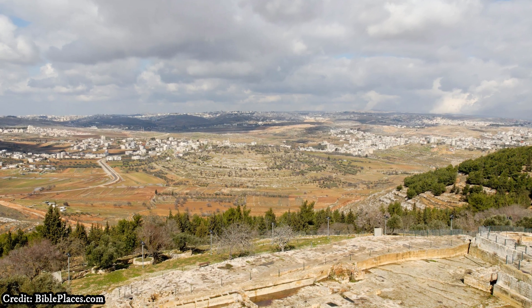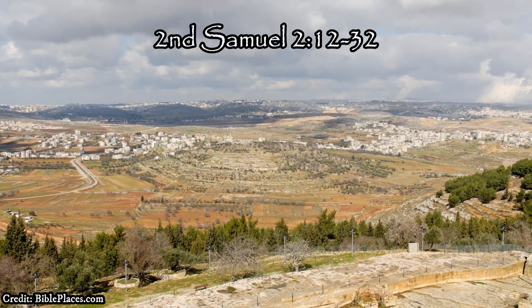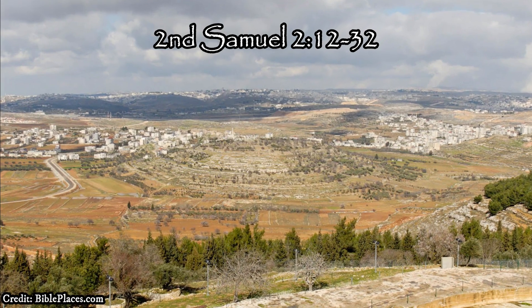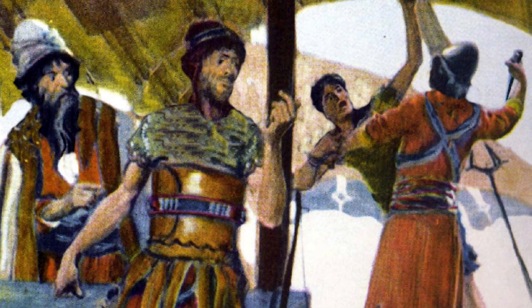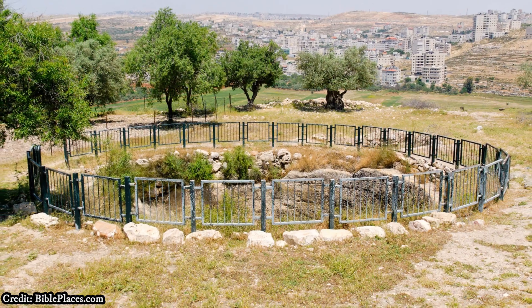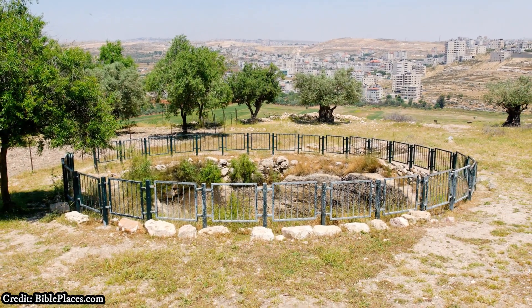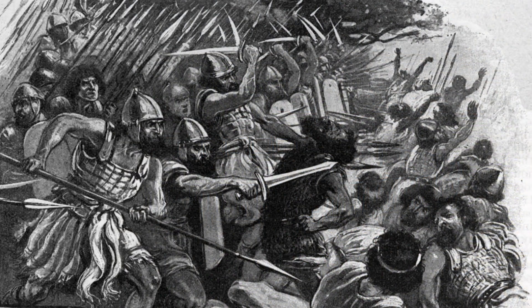Another grisly incident that occurred at Gibeon is found in 2 Samuel chapter 2 verses 12 to 32, where 12 men of King David met 12 men of Ish-bosheth and fought in a deadly contest at the city beside an important pool of water. This contest resulted in the deaths of both groups of 12 men and then led to a larger battle that was a victory for David's forces.